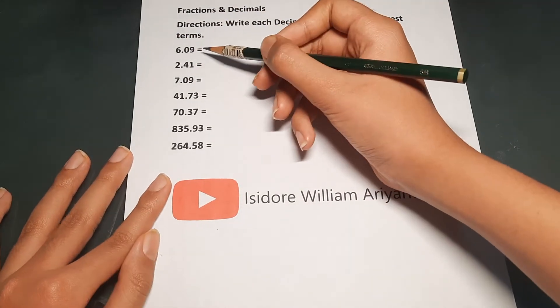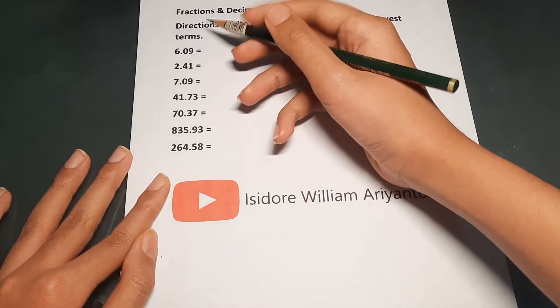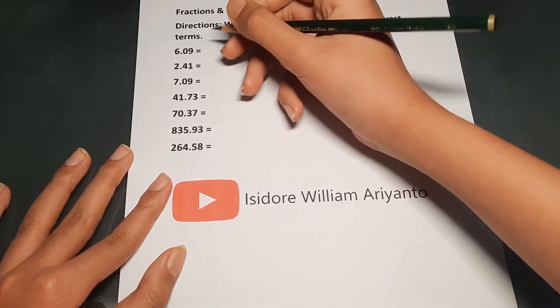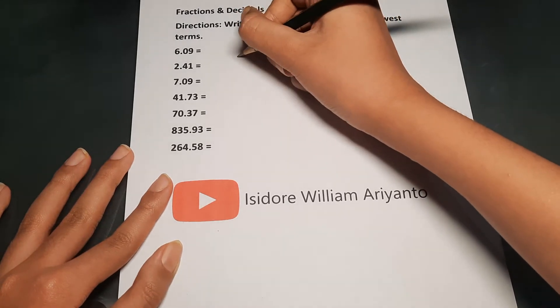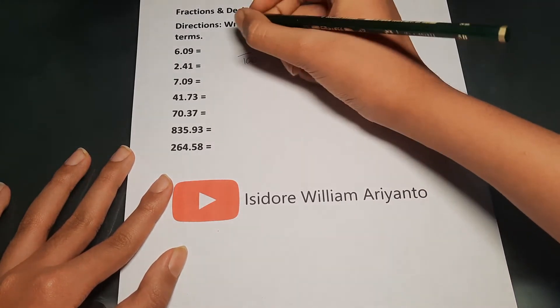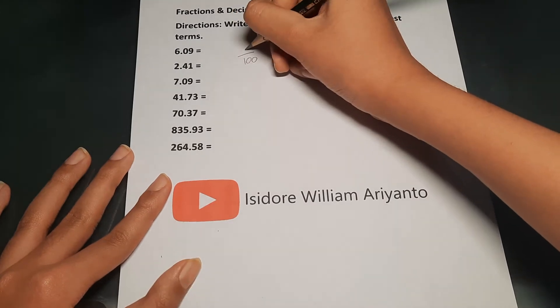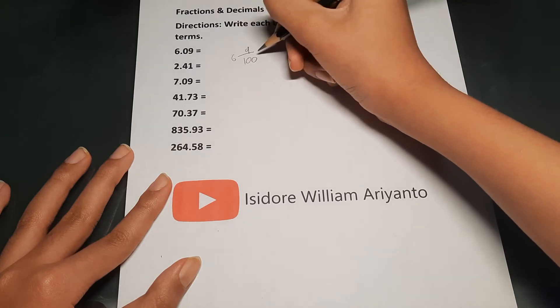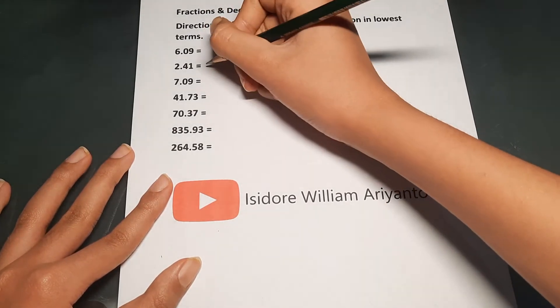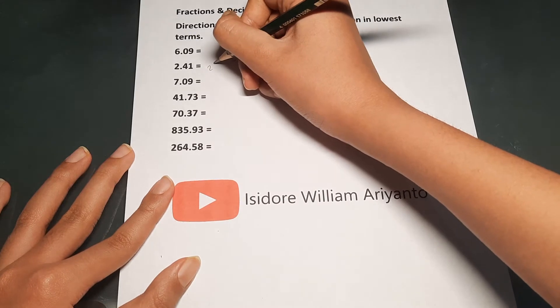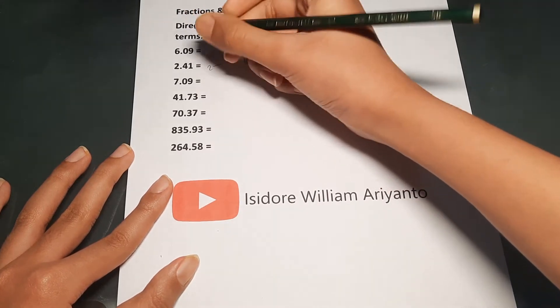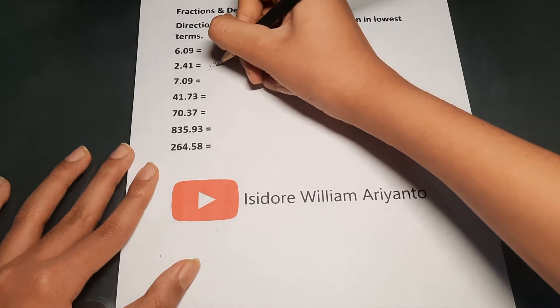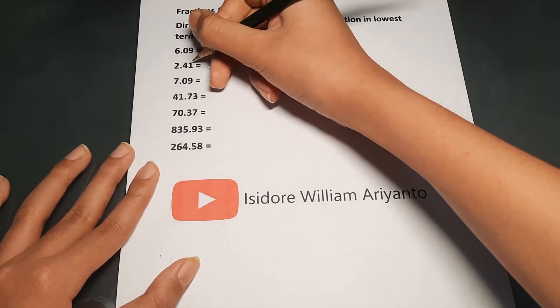If there are two decimal places, which is the case for all the problems in this set, it should be over 100. So in this case it's 969 over 100. The same goes with this one—the tenth place will be up here with 100 because of the extension.